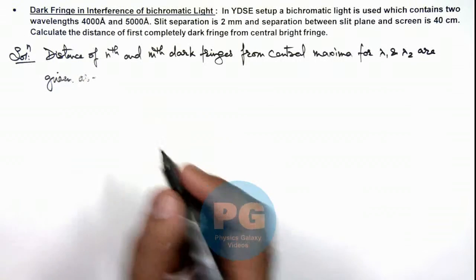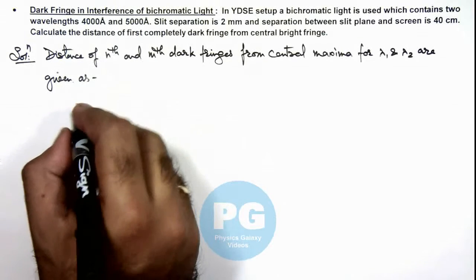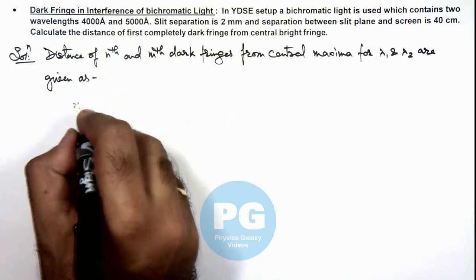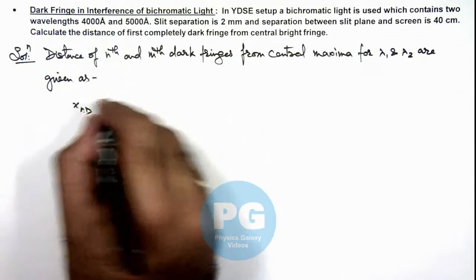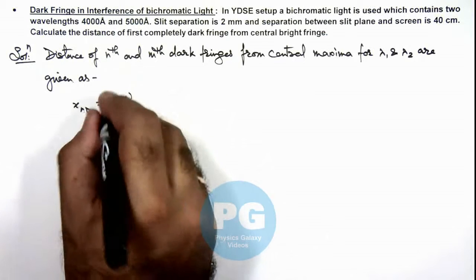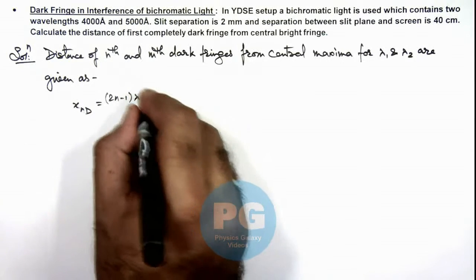The distance of the nth dark fringe can be given as xₙ = (2n-1)λ₁D/2d for the first wavelength.